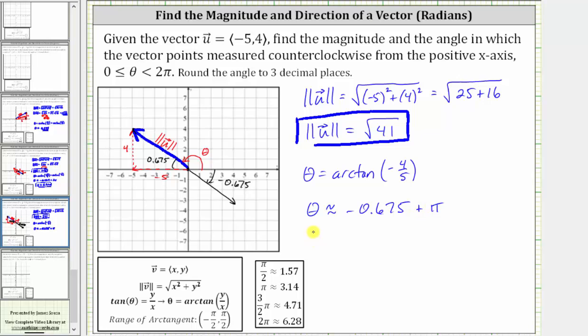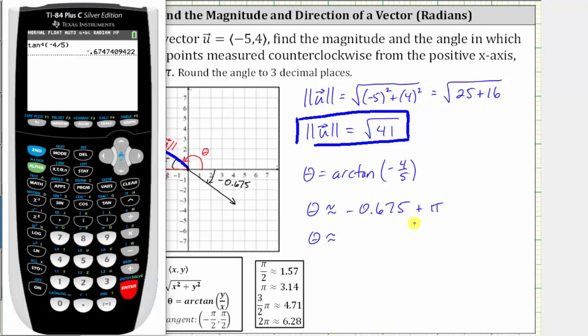So going back to the calculator, to have a more accurate angle theta, we could add pi radians to this previous answer by pressing plus and then pi, enter. To three decimal places, we have 2.467 radians.